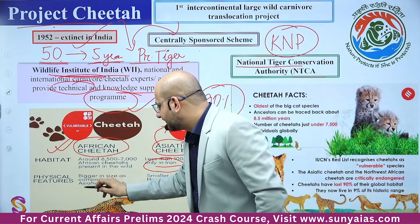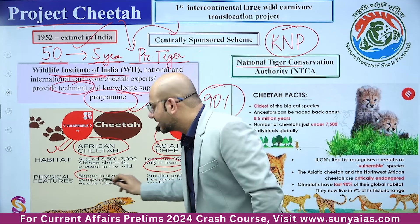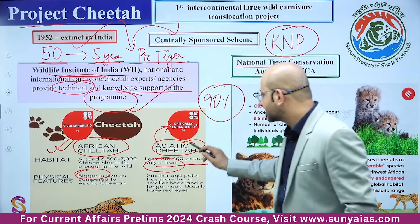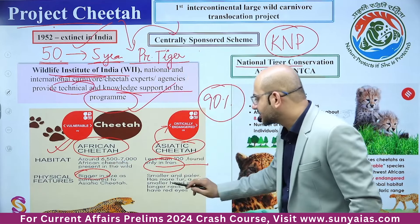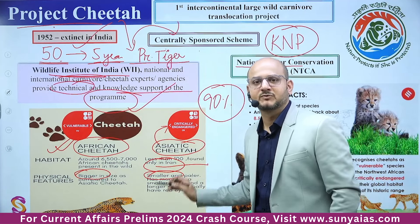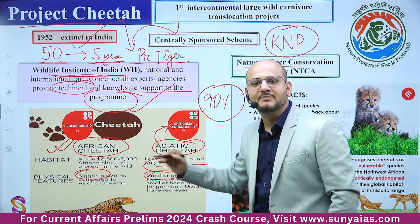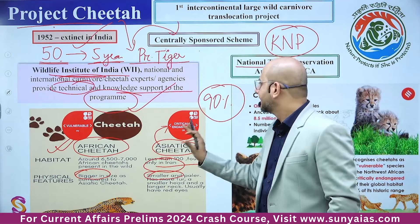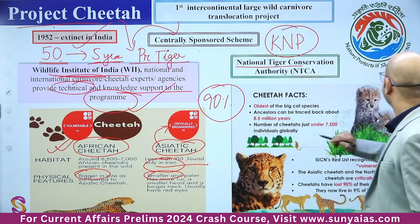Regarding physical features: African cheetahs are bigger in size whereas Asiatic cheetahs are smaller. This difference can be asked by UPSC.